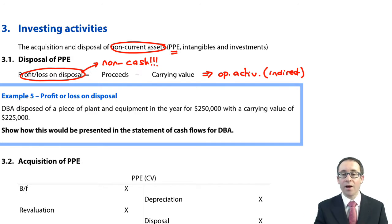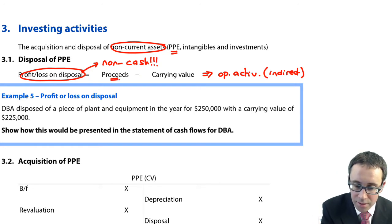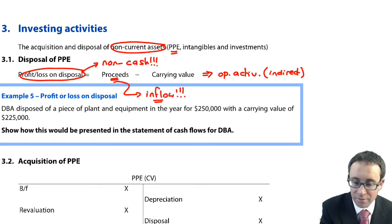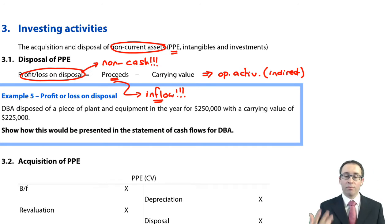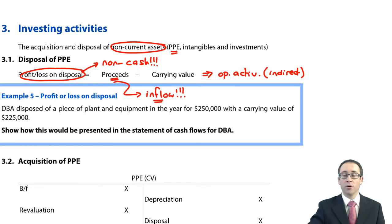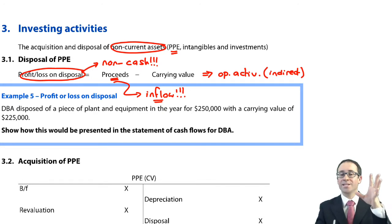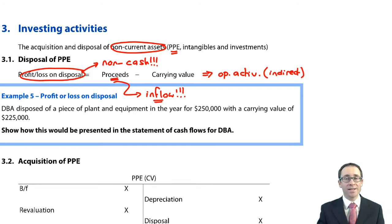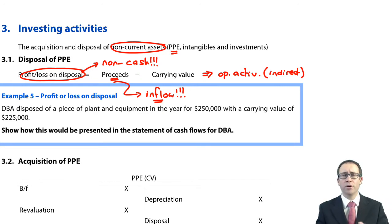So do just be careful there. The proceeds are the cash inflow that you may be required to calculate — they are the inflow from the disposal of PPE. Questions will give you two out of the three things: it could give you the profit or loss on disposal and the carrying value, in which case you work out the proceeds. If you're given the proceeds, that's the cash inflow from the disposal, but you would then need to work out the profit or loss on disposal, which goes in your operating activities. It covers both aspects — investing activities with the inflow from the proceeds, and operating activities with the non-cash expense or income.